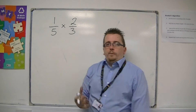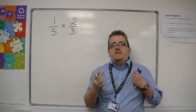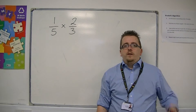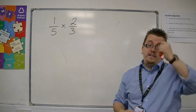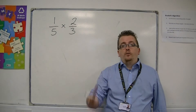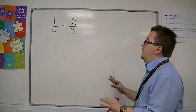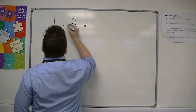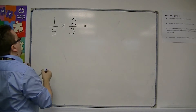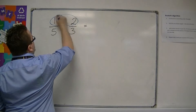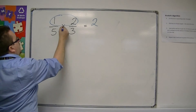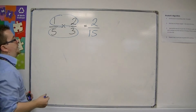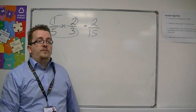Multiplying fractions is probably the easiest operation you can do with fractions. Adding and subtracting is quite challenging, but multiplying is very straightforward. All you do is multiply the top two numbers — so 1 times 2 — and then multiply the bottom two numbers — 5 times 3. So the answer is 2 fifteenths.